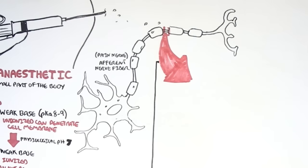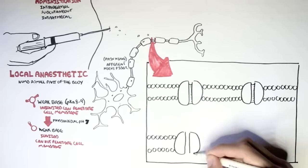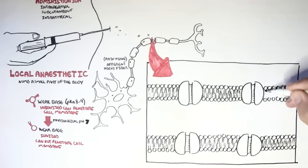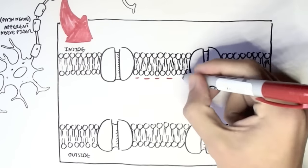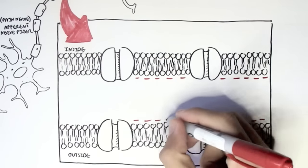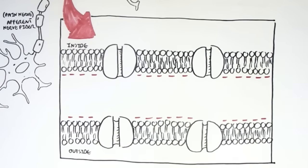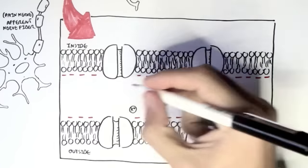Here is the cell membrane of the neuron with channels. Here is the outside of the neuron and here is the inside. In the inside of the neuron, it's more negatively charged in respect to the outside. In the inside, we have more potassium ions and in the outside, we have more sodium ions.